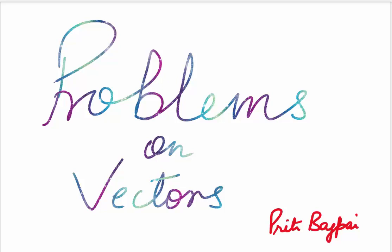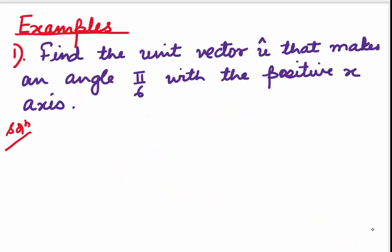Hi everyone, welcome back. In the previous two videos on vectors, we did the basics. We first saw what vectors are, where they are used. We did some basic operations on vectors like vector addition and subtraction. In the second video, we saw what vector multiplication is — the two types: dot product and cross product. Now let's come to the problems. In this video, we will first do some basic questions, and then we will define what is the equation of a line and what is the equation of a plane using vectors.